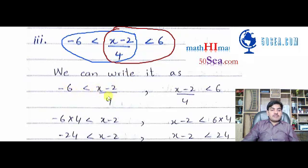Minus 6 is less than x minus 2 over 4, and here x minus 2 over 4 is less than 6.